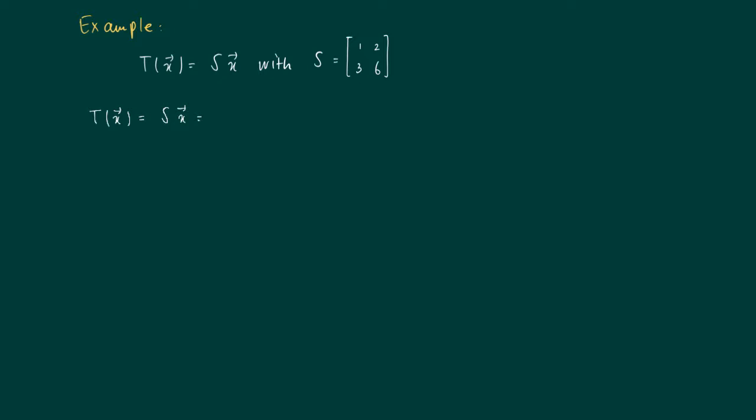So T(X) = S times X, and if we write down X in coordinates, then we get X1 times the first column of S, [1, 3], plus X2 times the second column of S, [2, 6].